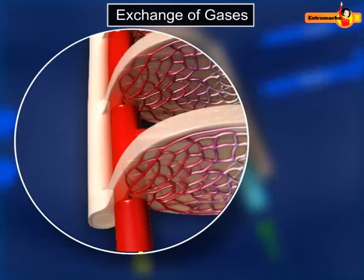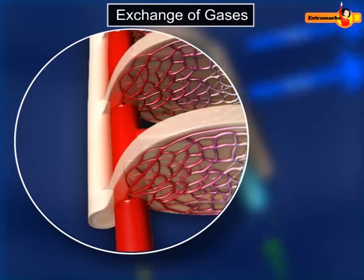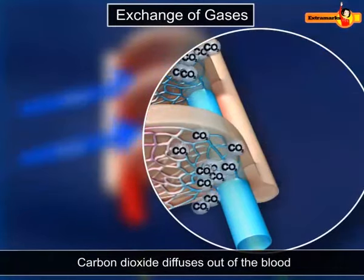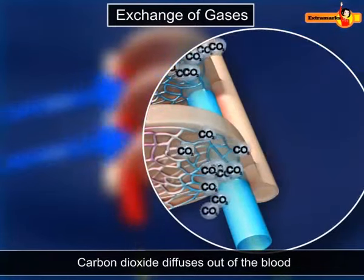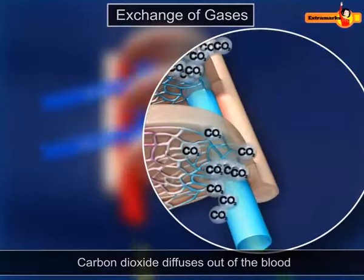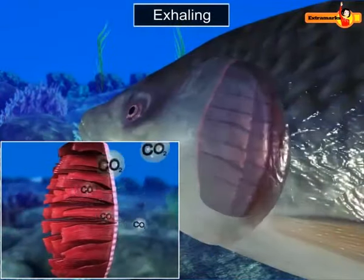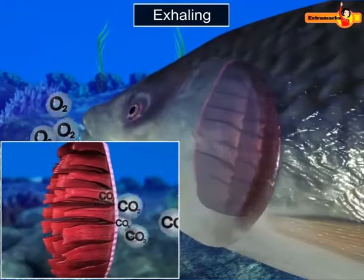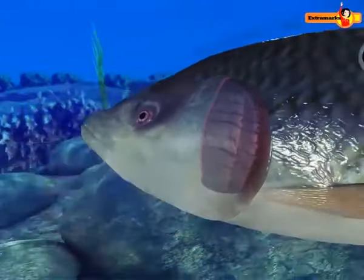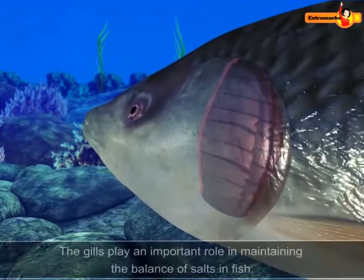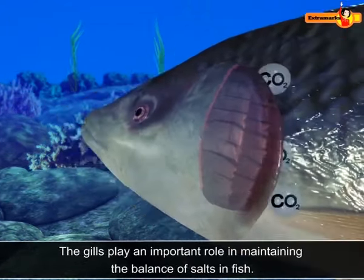The unique structure of the gills ensures that they absorb most of the oxygen dissolved in the water passing between them. Simultaneously, carbon dioxide from the blood diffuses out of the gill capillaries into the water. The water containing carbon dioxide is expelled through the open operculum.